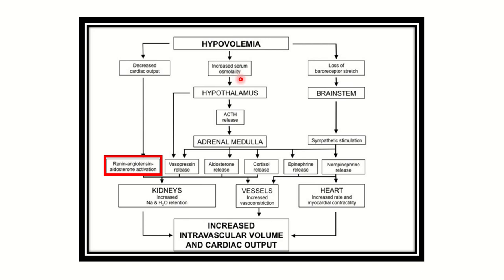On the other hand, increased serum osmolarity occurs when water leaves the body, the solute component becomes more concentrated, and plasma osmolarity increases. This hyperosmolarity acts on the hypothalamus and causes ACTH release. ACTH — adenocorticotropic hormone — acts on the adrenal gland and they release different substances, finally increasing blood pressure. The baroreceptor mechanism also plays an important role.